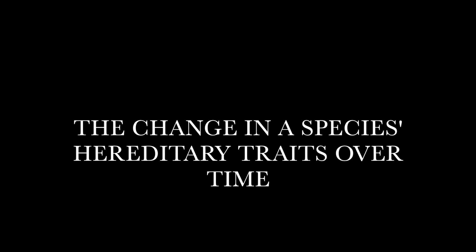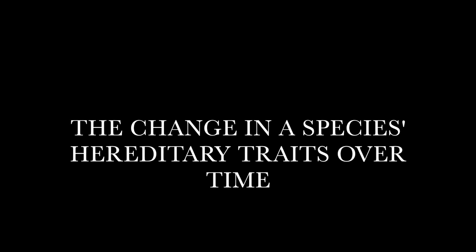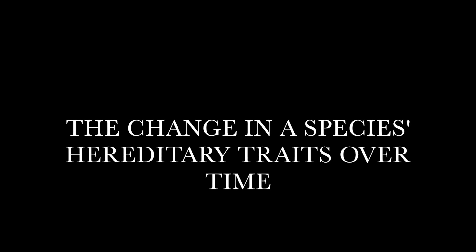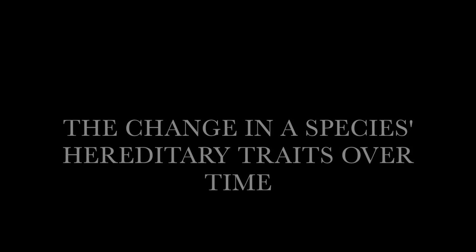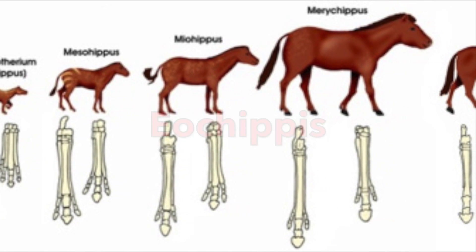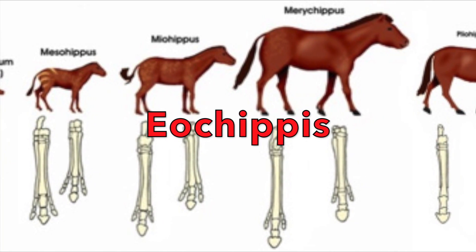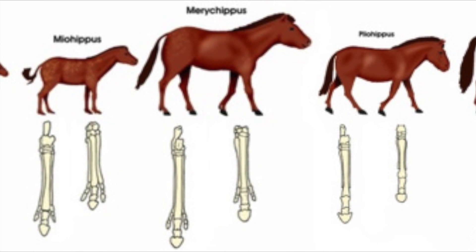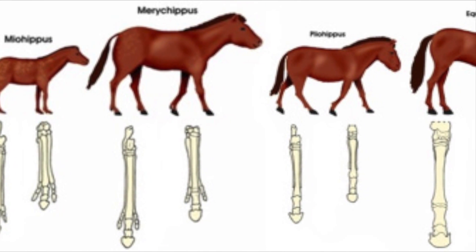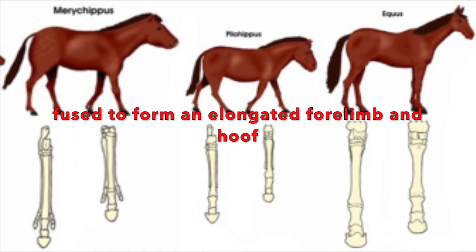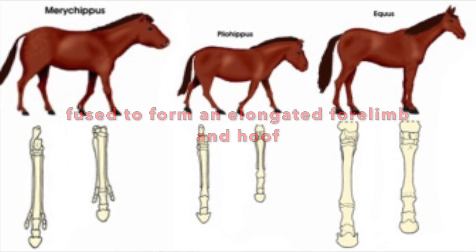Evolution is the change of a species' hereditary traits over time, and this is proven by comparative anatomy as well as the transition of varying species, such as the horse. The horse's pentadactyl limb originated within the first Eohippus. This form had three points of contact to the ground. Through environmental changes, these three points have become unnecessary and have fused to form an elongated forelimb and hoof to support their weight.